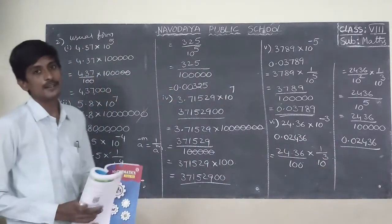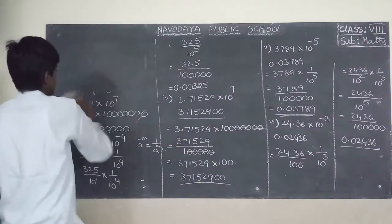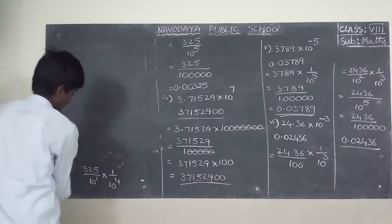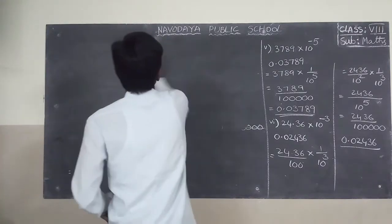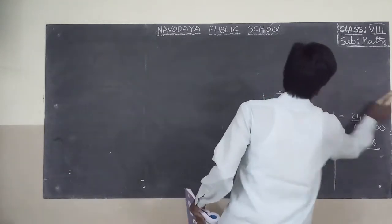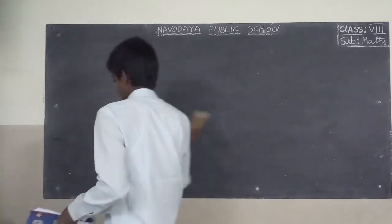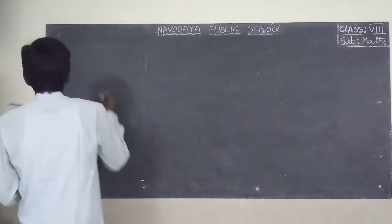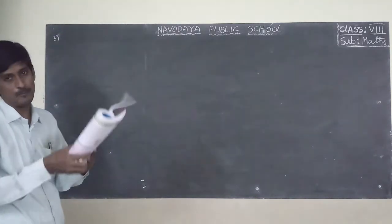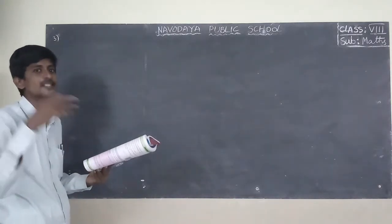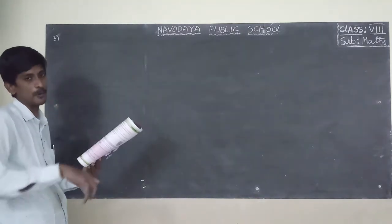This is the second round. Next, step 3: Express the following information in the standard form. Standard form means point something — you write like this, in 10 to the power of something, either negative or positive.